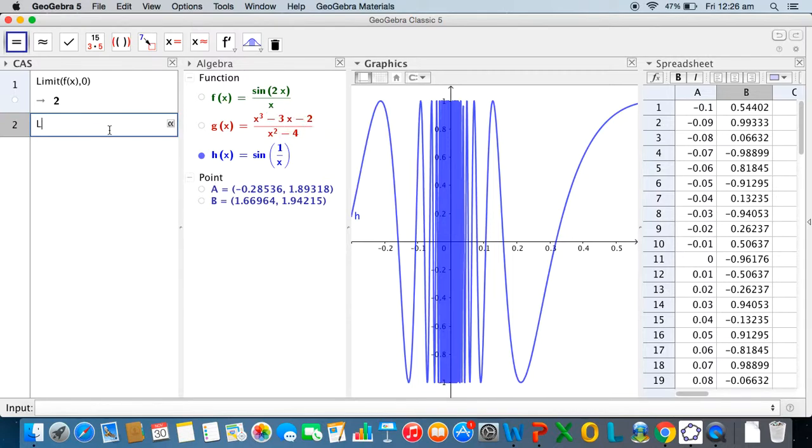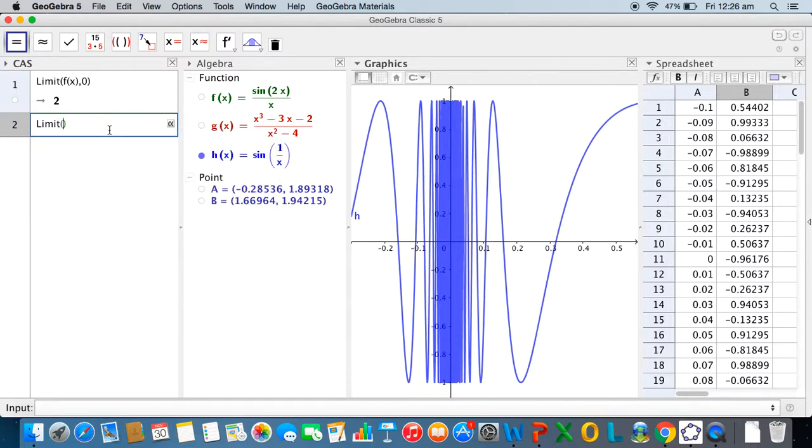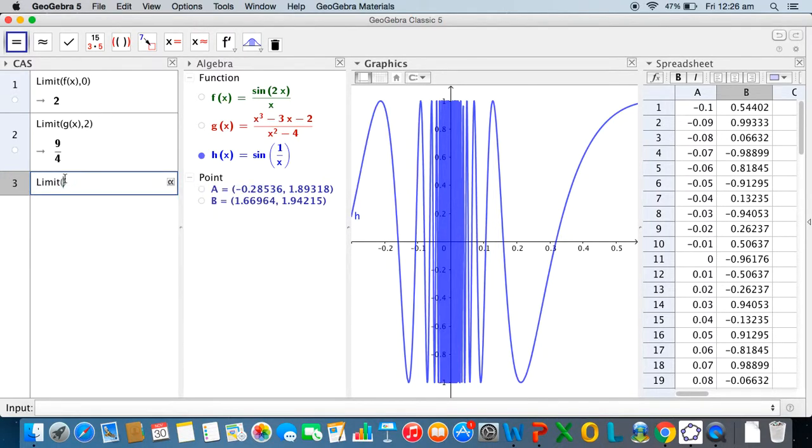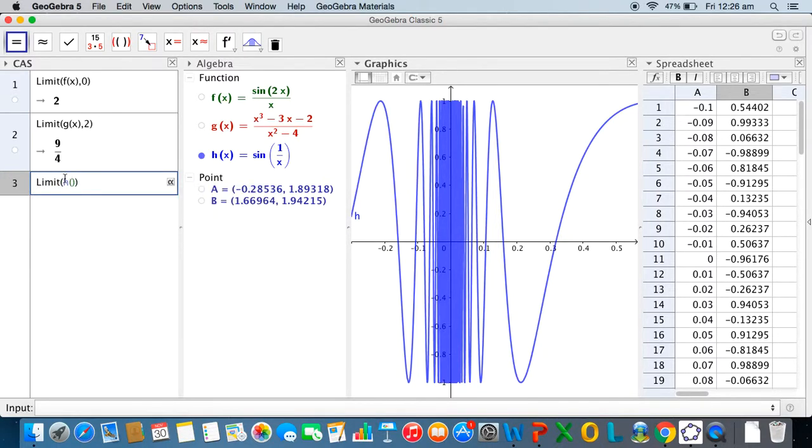Similarly I can say limit g of x as x approaches 2. This limit was 9 by 4, which is 2.25. And finally, if I look at limit h of x as x approaches 0, the output is a question mark because this limit does not exist.